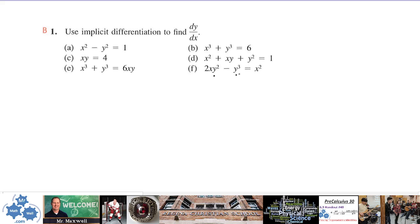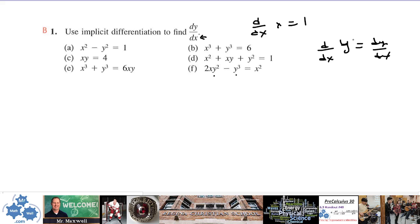We'll differentiate both sides with respect to x. That means the derivative with respect to x of x is 1. The derivative with respect to x of y is dy/dx, or y prime. When we differentiate y with respect to x it's just y prime; when we differentiate x with respect to x it's 1.